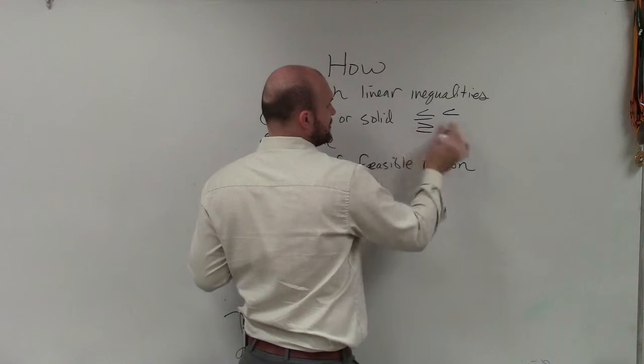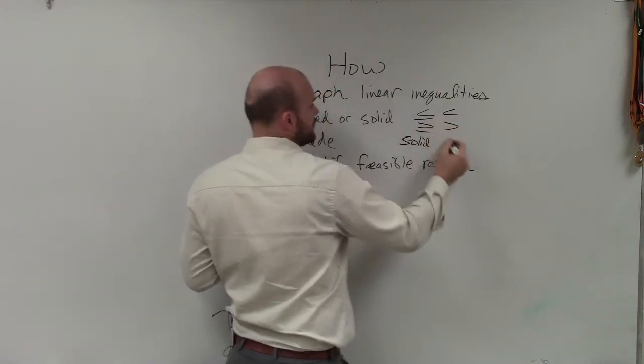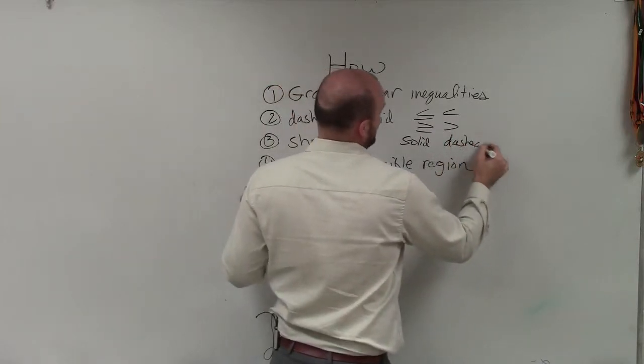If it's less than or equal to or greater than or equal to, then you'll have a solid line. If it's less than or greater than, then you'll have a dashed line.